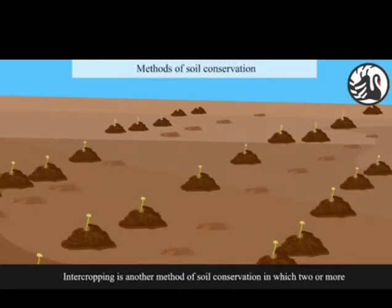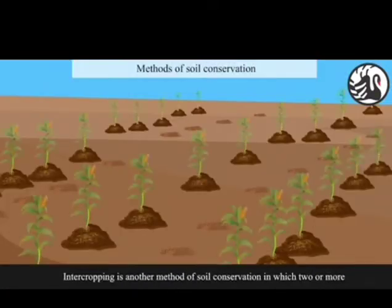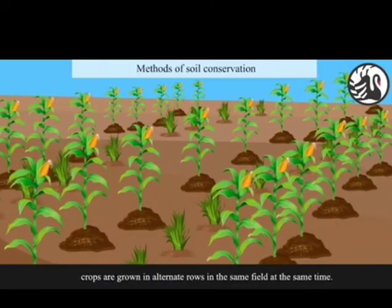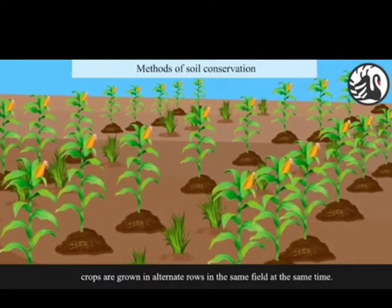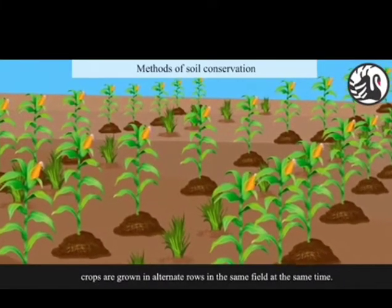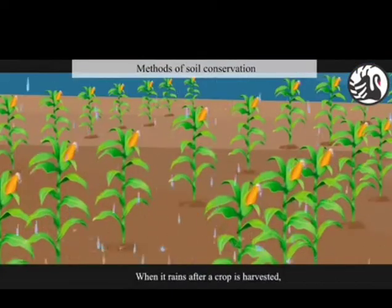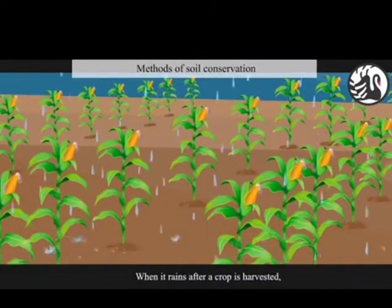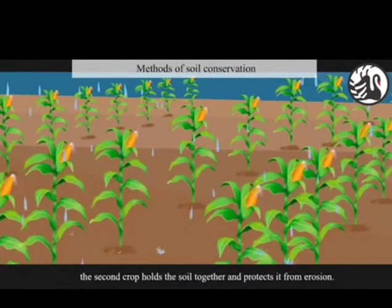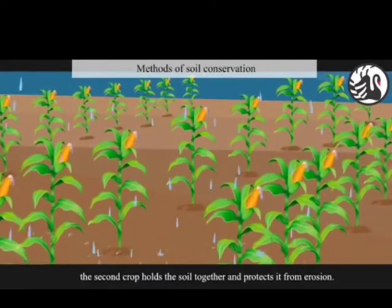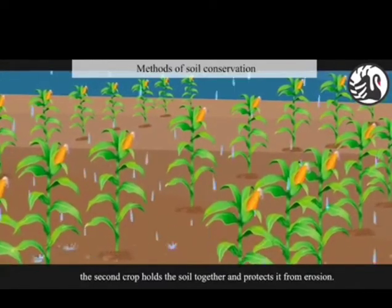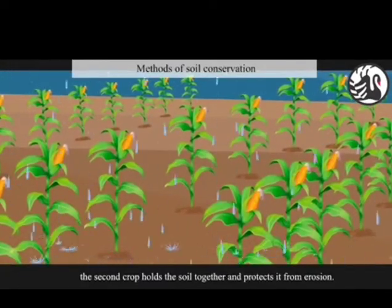Intercropping is another method of soil conservation in which two or more crops are grown in alternate rows in the same field at the same time. When it rains after a crop is harvested, the second crop holds the soil together and protects it from erosion.